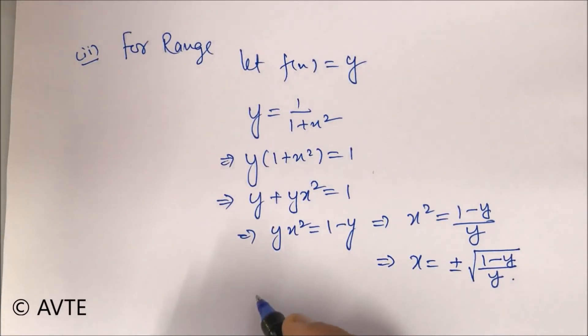Now because this is the square root, so the target will be that this expression must be greater than equal to 0.